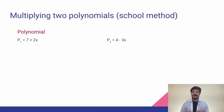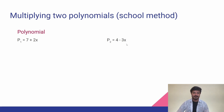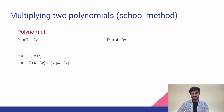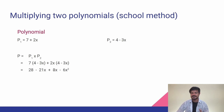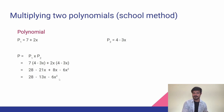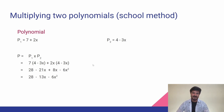Let's start with the multiplication of two polynomials — how we used to do this in school. Let's say we have two polynomials: P1 is 7 + 2x, and P2 is 4 − 3x. The simple way is to take the first term from the first polynomial and multiply it with the whole second polynomial — so 7 times (4 − 3x) — then take the second term, 2x, and multiply with the whole polynomial. If you do the math, you get 28 − 21x + 8x − 6x², which simplifies to 28 − 13x − 6x². We'll use this example throughout the lecture.